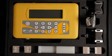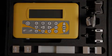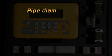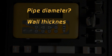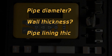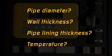First steps begin with how to program the flow meter. When programming the unit, you need to know the pipe outside diameter, the wall thickness, the pipe lining thickness if required, and the temperature of the application.